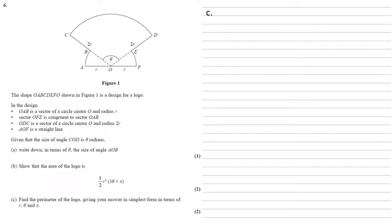For part C, we need to find the perimeter of the logo, giving our answer in simplest form in terms of R, theta, and π. So we're dealing with some arc lengths here. Our formula for arc length is θR, where theta is the angle of the sector and R is the radius.